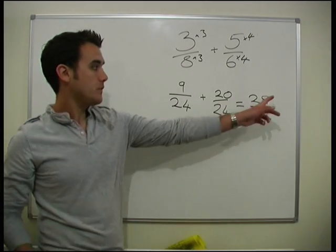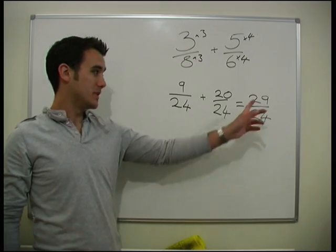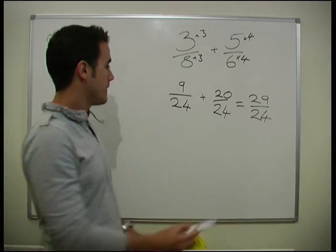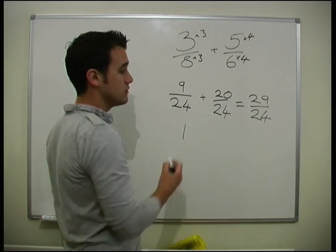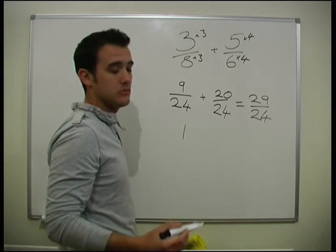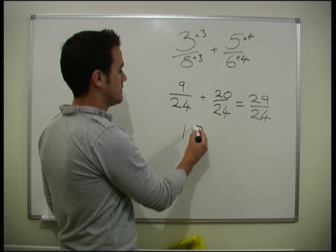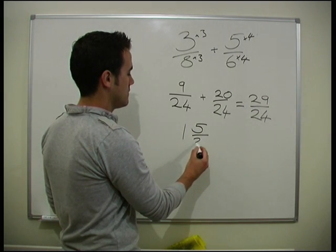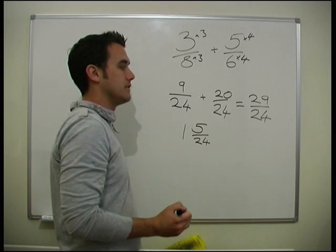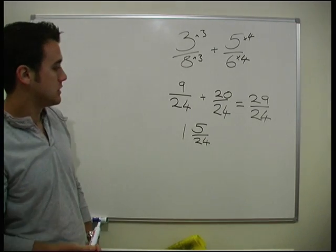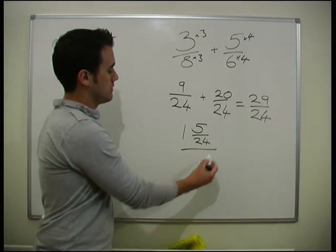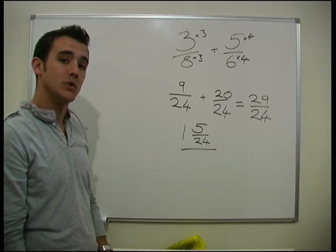We're now a bit top-heavy. We've got 29 over 24. So what we do, how many 24s go into 29? One does. So we've got actually a whole 1. How many we've got left over? We've got 5 left over. So we have 5 over 24 left over. And that doesn't cancel down at all. So that's our answer: 1 and 5 twenty-fourths.